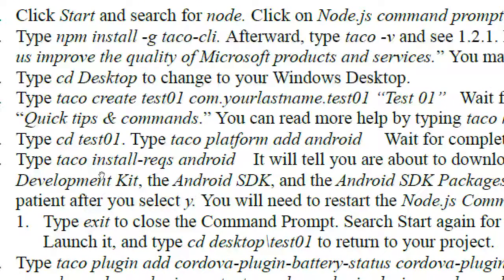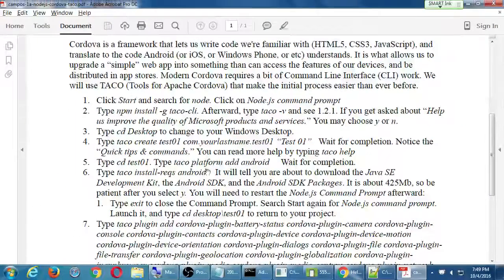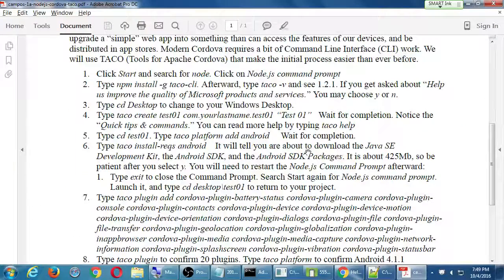This is one we will definitely not do here but you need to do at home: 'taco install requirements android'. It will connect to the server and say you need this and this and this — you need to download 400 more megabytes; let us take care of it, press yes, and it'll do it. In the old days we had to manually download all of these separate pieces of software; TACO does it all behind the scenes now.